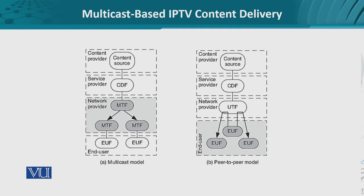Let's look at the layered architecture of the overall NGN framework in which we have the content provider, service provider, network provider, and end user. These are four different domains or different boundaries in which the equipment resides. The content provider is actually the application function server that hosts the content. The service provider is the third party providing services which have been developed by the content provider. The network provider is the network operator, and then we have the end user equipment.